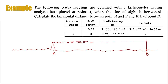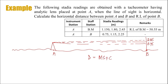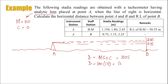The stadia readings taken at point B are: upper reading 2.25 and lower reading 0.75. To calculate the distance, the formula is MS plus C. Since the lens used is an analytic lens, the multiplying constant M is 100 and the additive constant C is 0, so the formula becomes 100S. The stadia intercept S is the difference between upper and lower readings: 2.25 minus 0.75 equals 1.5. So the horizontal distance is 100 multiplied by 1.5, which gives 150 meters.